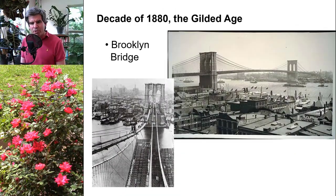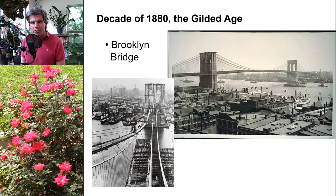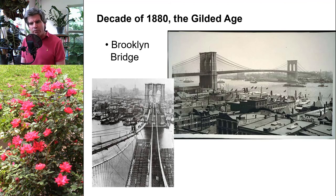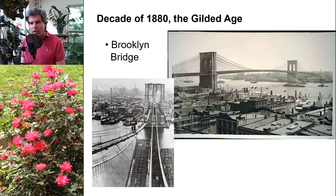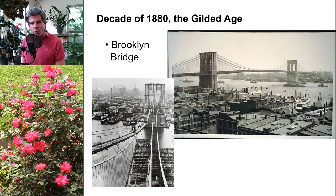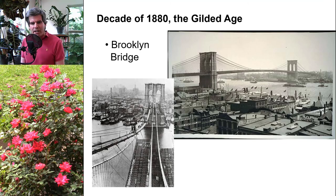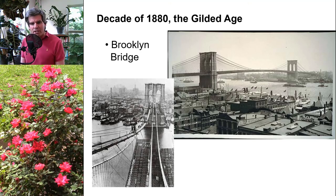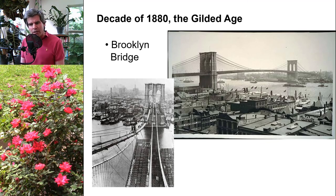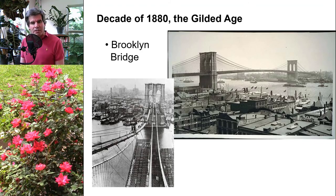Another impressive engineering accomplishment was the completion of the Brooklyn Bridge in 1883. The pictures on screen are from the time of its construction. The bridge was supported by thick steel cables, and the two towers were set on foundations placed below the water's surface and below a layer of sediment at the bottom of the river. To accomplish this, huge watertight boxes called caissons — the size of the needed foundation — were lowered into the river, and an air pump forced air inside to keep water out while workers dug the foundation.